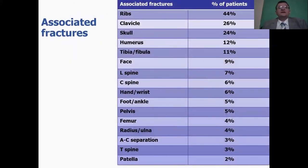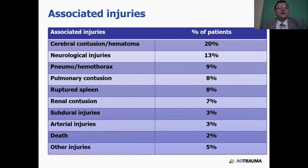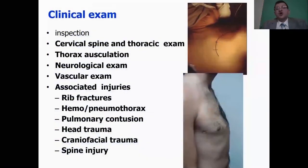What are the common associations? Well, rib fractures and skull fractures are the most common, followed by spine injuries, which are about 16% as well. Cerebral hematomas, contusions, neurological injuries, hemopneumothorax, pulmonary contusions, and subdural injuries are also common in these patients.